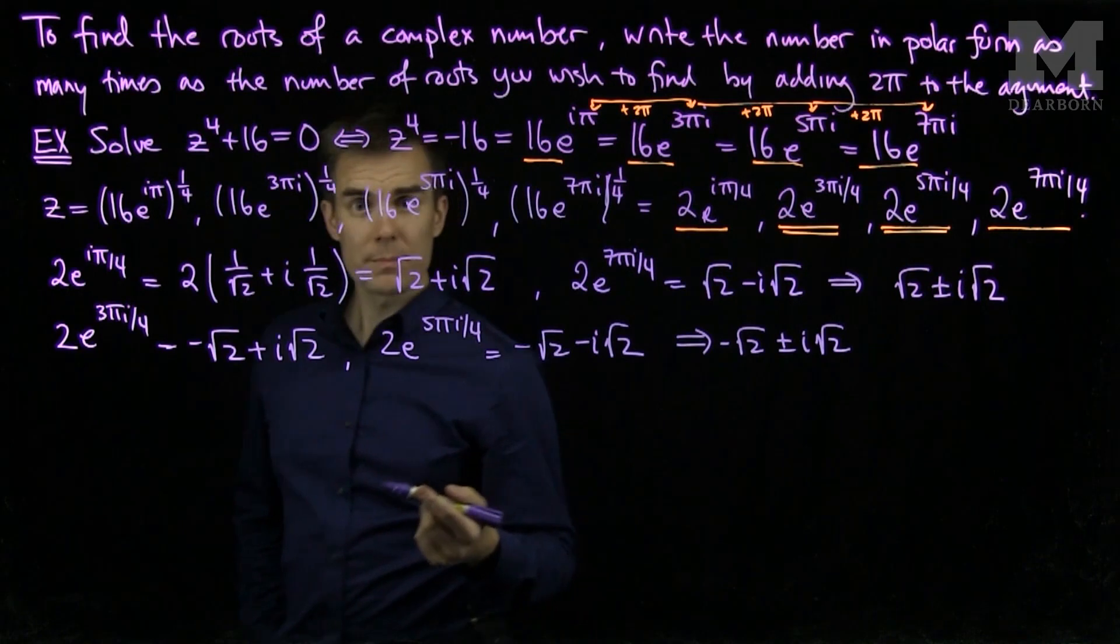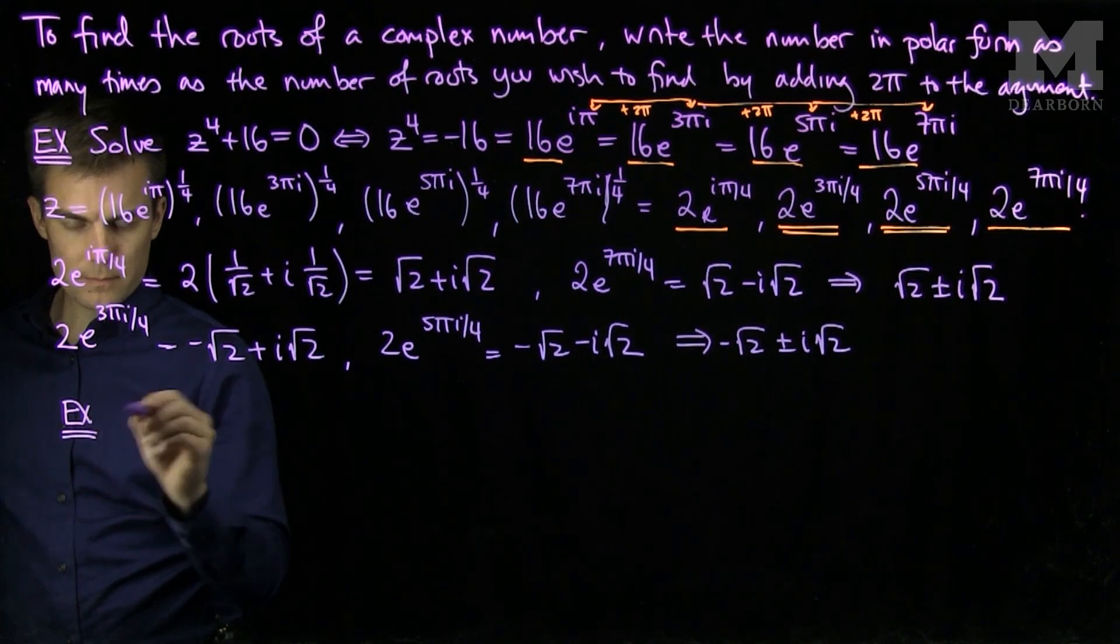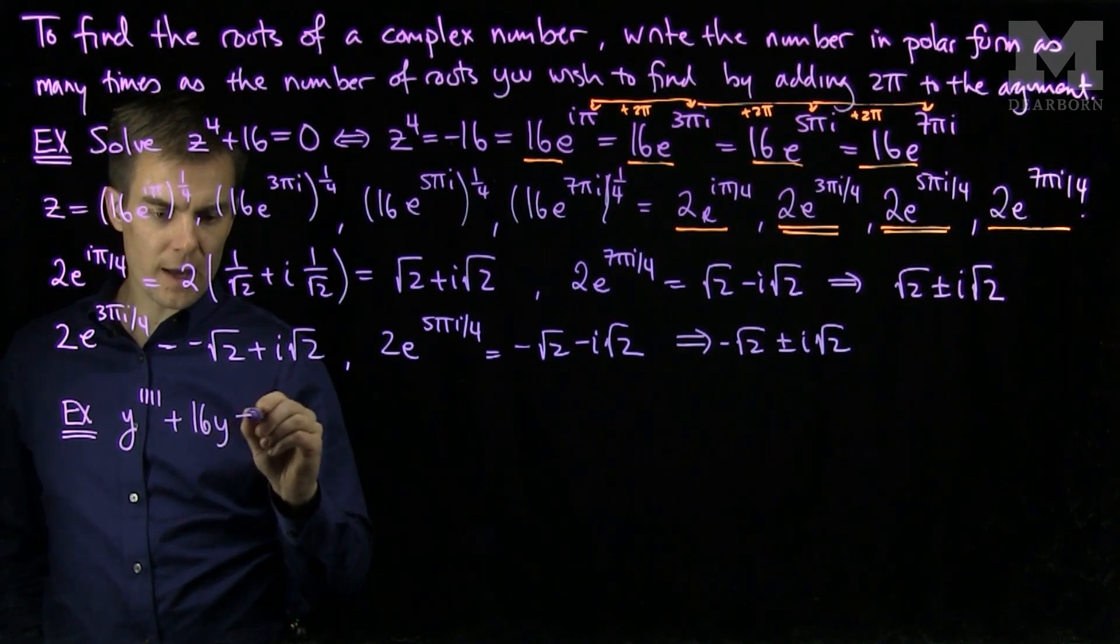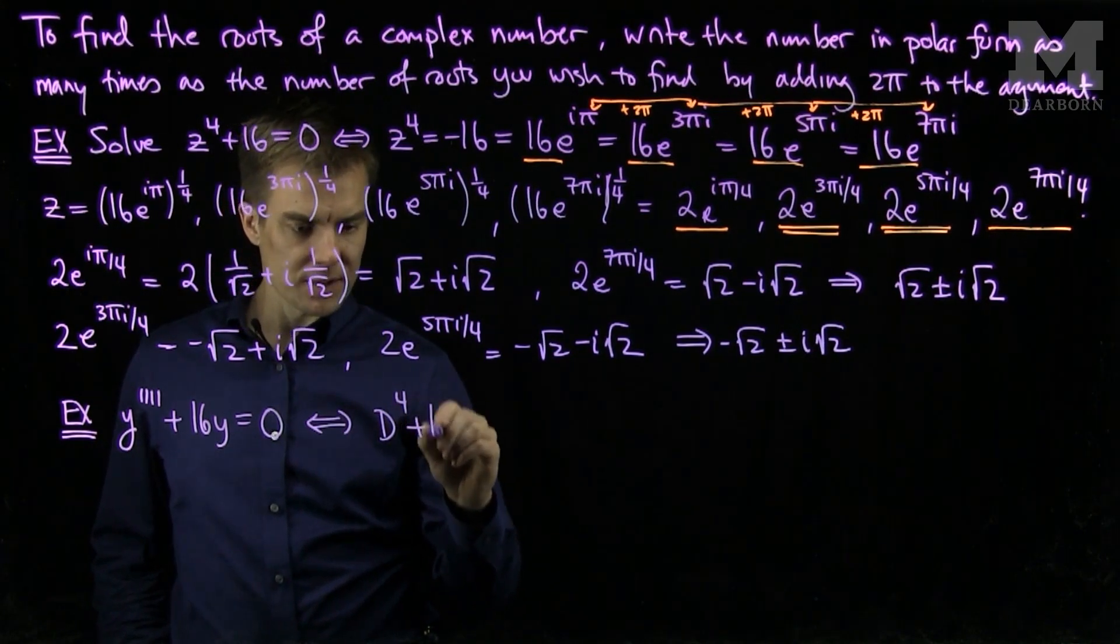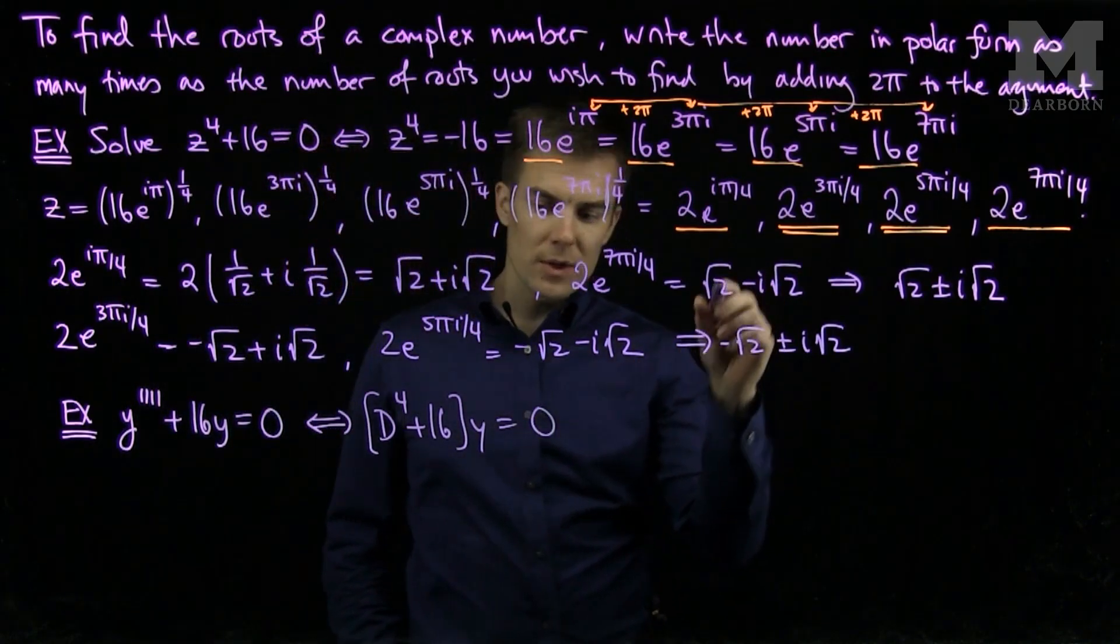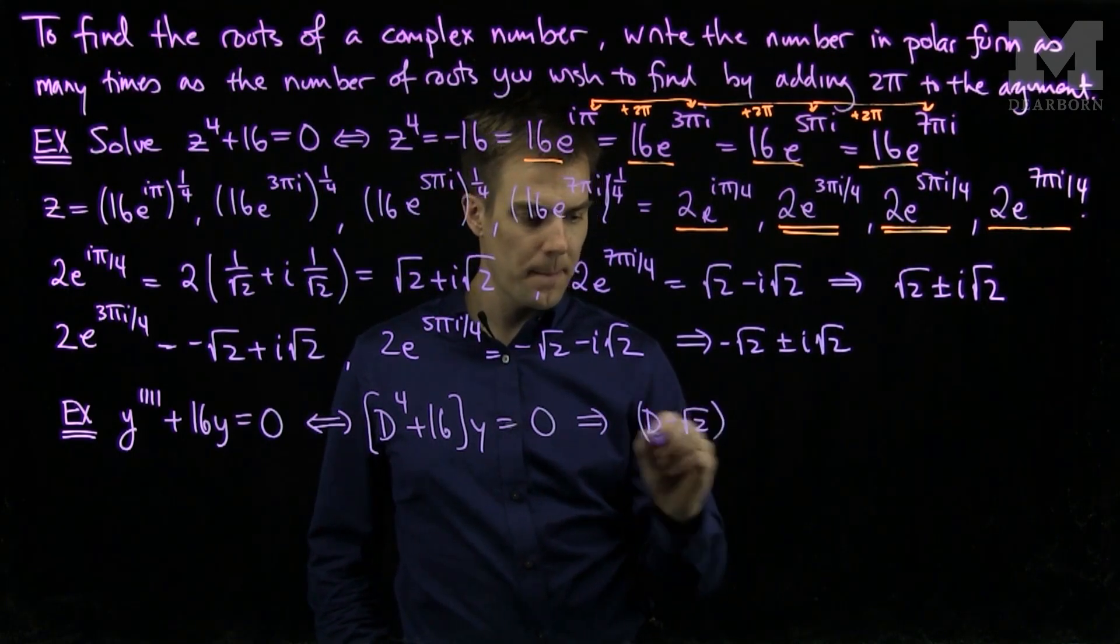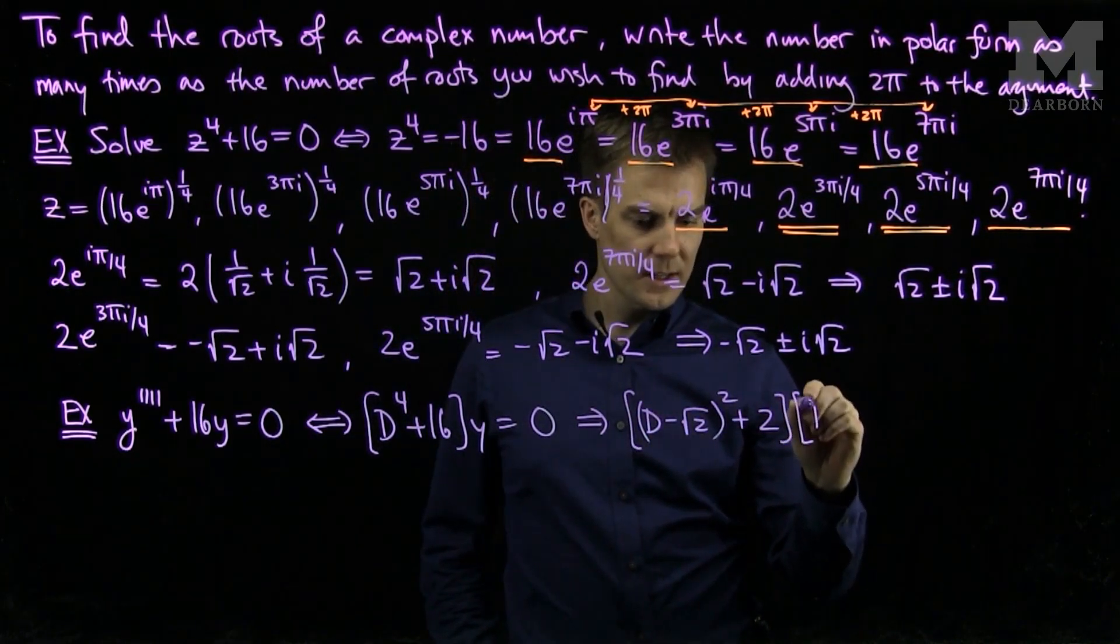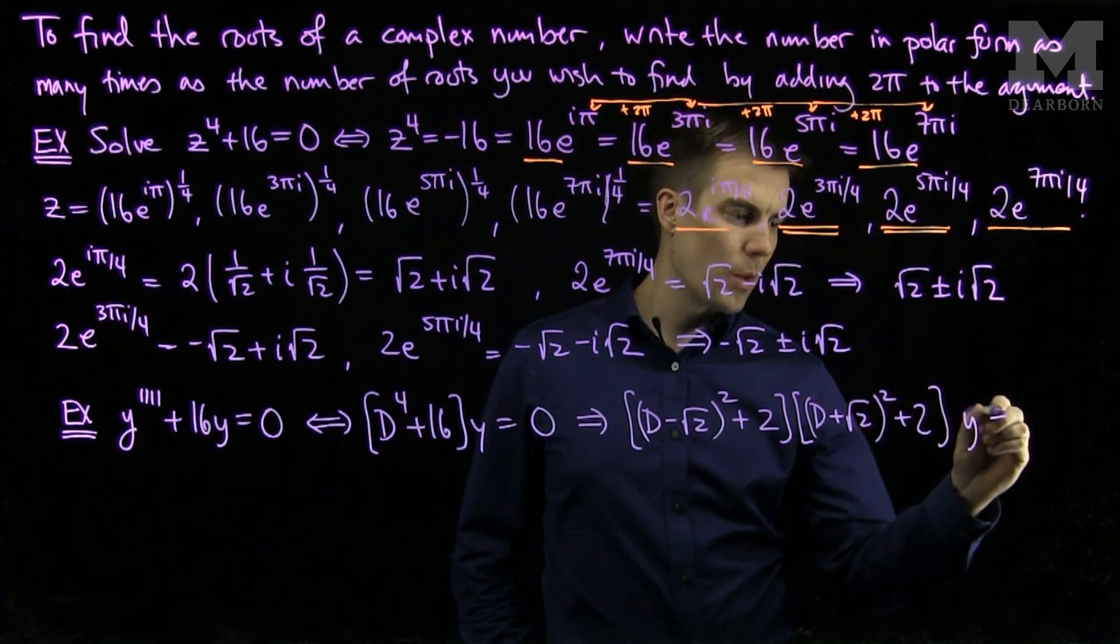I will therefore have the corresponding quadratic factors in the following differential equation. If we look to solve y quadruple prime plus 16y equals 0, we see that this is equivalent to d to the 4th plus 16 applied to y is 0. Using these roots, we see that we have the factorizations d minus the square root of 2 squared plus 2, and d plus the square root of 2 squared plus 2 applied to y is 0.